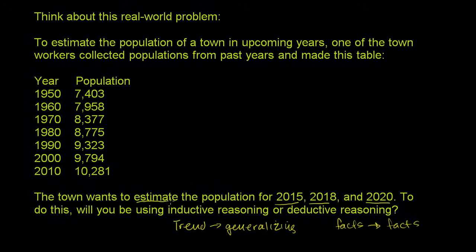Now, when the town is estimating — and that's kind of a clue that they're not going to know the exact population for 2015, 2018, and 2020 — these years are in the future. They don't know what the population will be. The best they can do is see the trend of growth, maybe see what percentage it's growing every 10 years or what the absolute number of growth is every 10 years, and continue that trend out to 2015, 2018, and 2020. So they'll be looking for a trend over this 60-year period and generalizing it out to those years — this will be inductive reasoning.